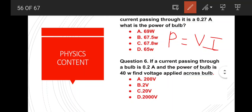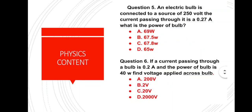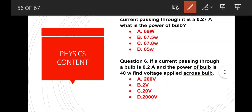V is 250 volt and the current I is 0.27 ampere. We multiply: 250 into 0.27. The correct answer is option B — 67.5 Watt.